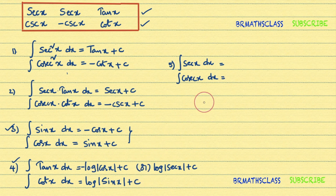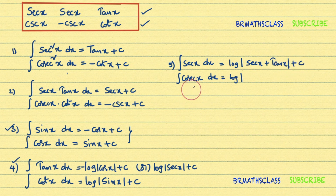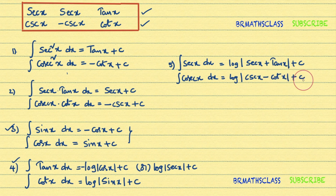You already learned eight formulas. Now the ninth: integral of secant x dx — this also starts with log mod. Observing the table, secant x is in the first row; the remaining entries are secant x and tan x. So integral of secant x dx is log mod secant x plus tan x plus C. Similarly, integral of cosecant x dx — cosecant x is in the table; remaining are cosecant x and cot x with a minus sign — so the answer is log mod cosecant x minus cot x plus C.